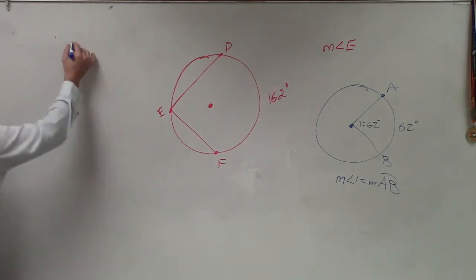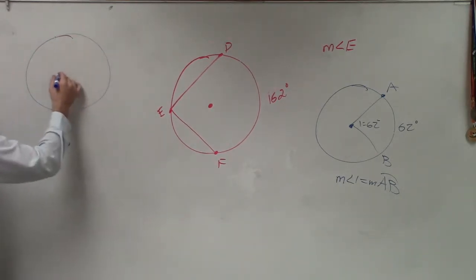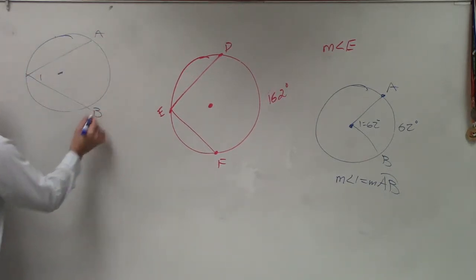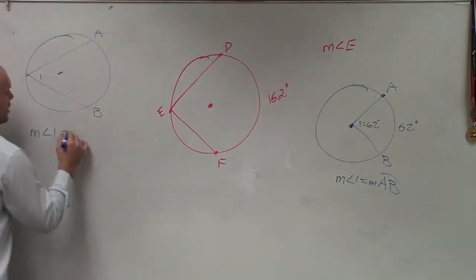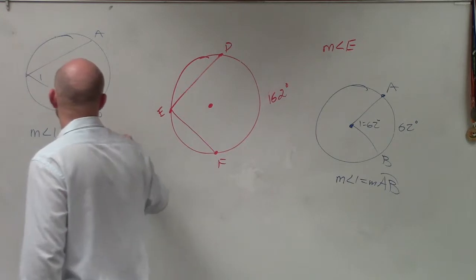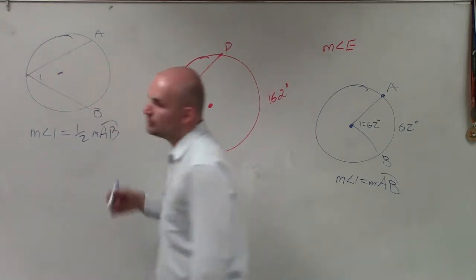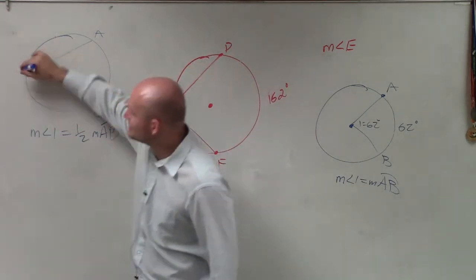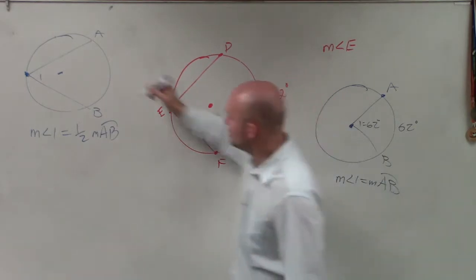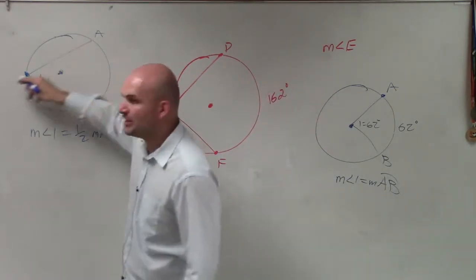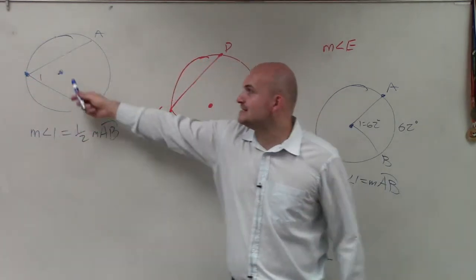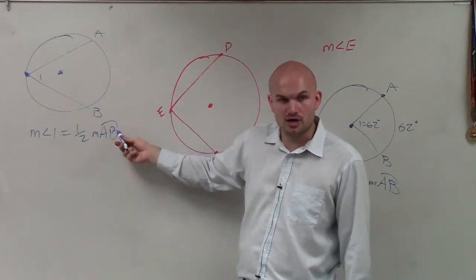Then last class period, we talked about inscribed angles. If we did the exact same points and angle with an inscribed angle, what was different is the measure of angle 1 was equal to one-half the measure of arc AB. So when you have an angle that is not at the center, but it's on the circle, then this angle's measurement is one-half of your arc.